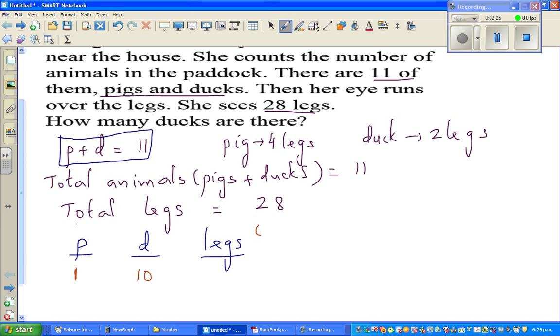I will make up a formula here. Legs. We can write legs as a formula. Formula would be, so that is P times 4. You have to multiply the number of pigs times 4 for the number of legs for pigs, plus D times 2, because ducks have two legs and pigs have four legs.